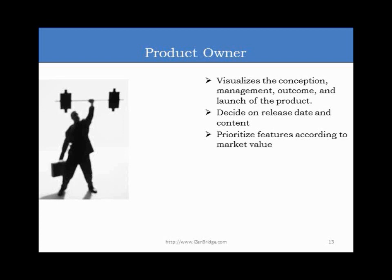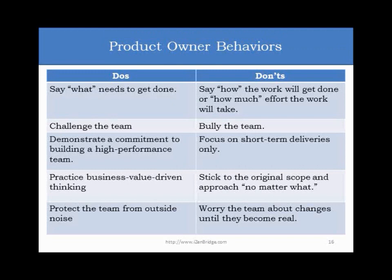The Product Owner decides the release date based on minimum marketable features. During a release planning meeting, the Product Owner brings a prioritized product backlog with an inventory of prioritized features, and the team declares their capacity. Balancing capacity and priorities occurs in the release planning meeting. The Product Owner takes the call related to priority, and the capacity is treated as fixed. Based on the team's velocity, the Product Owner decides what the release date will be, based on his conditions of satisfaction — the minimum features he wants to see in the product.